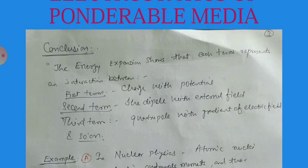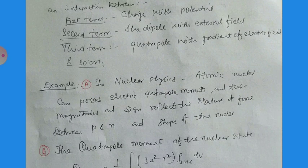We conclude that each term in the energy expansion represents an interaction: the first term is the charge interacting with the potential, the second term is the dipole interacting with the external field, and the third term is the quadrupole moment interacting with the gradient of the electric field, and so on. These interactions produce the net energy.